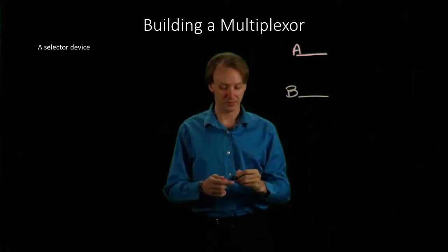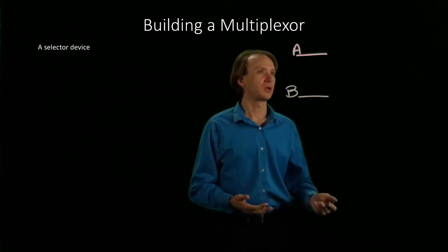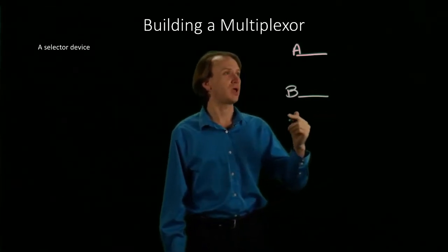My 1-bit multiplexer will have two inputs. I've got some A and some B. And for both of these cases, these values are going to go into two AND gates.